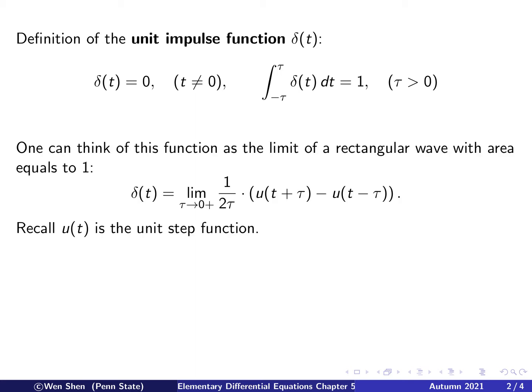One way of visualizing this impulse function is to think of it as the limit of some sequence. For example, we can think of it as the limit of a rectangular wave with area equal to 1. The expression u(t+tau) minus u(t-tau) gives a rectangular wave with height 1 from negative tau to tau. The total length is 2 tau, and if you divide by 2 tau, it becomes a rectangular wave where the area equals 1.